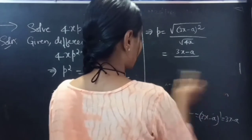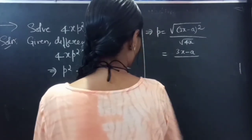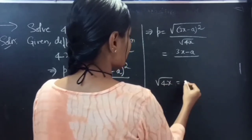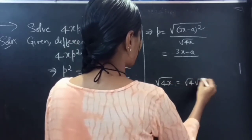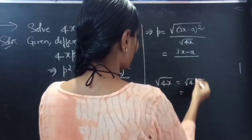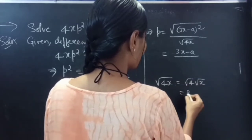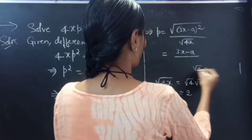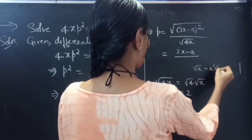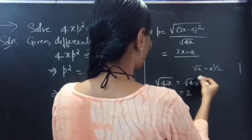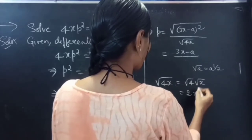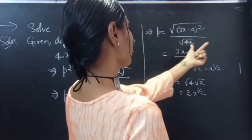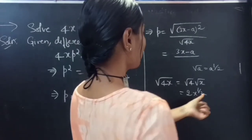For the denominator, square root of 4x can be written as square root of 4 times square root of x. We know that square root of 4 is 2, and square root of x equals x to the power 1/2. So we replace square root of 4x with 2·x^(1/2).